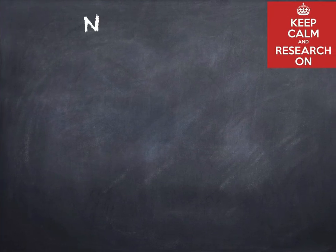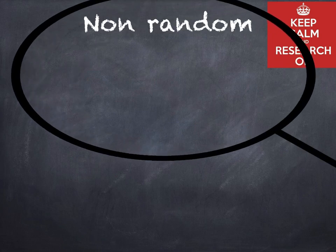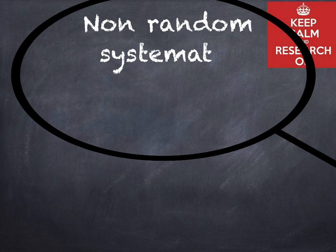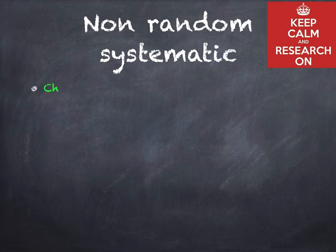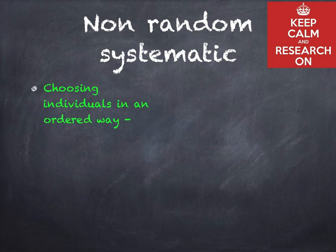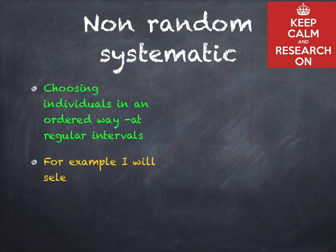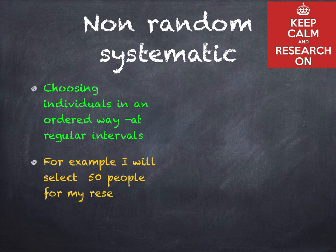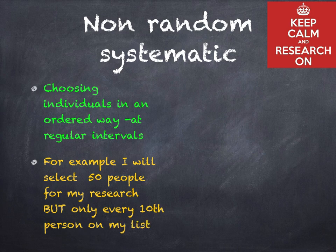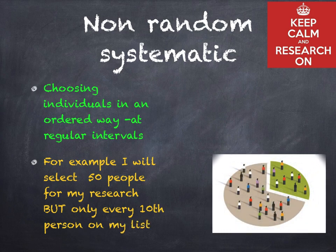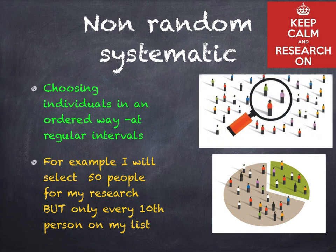Non-random systematic sampling involves choosing individuals in an ordered way at regular intervals. For example, selecting 50 people for a research project where only every 10th person on the list is chosen.